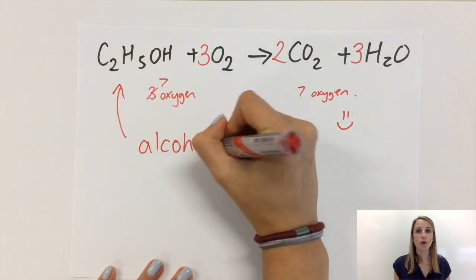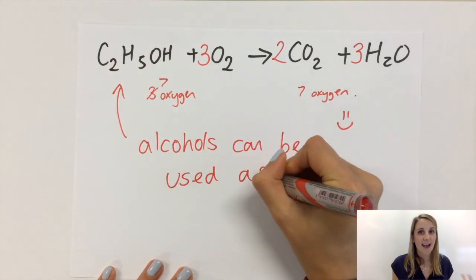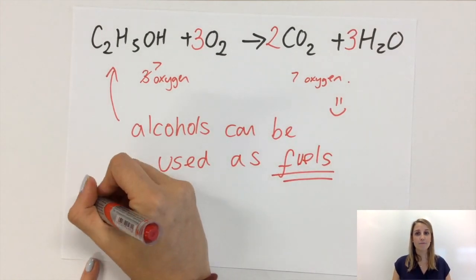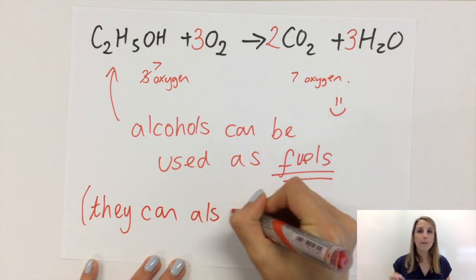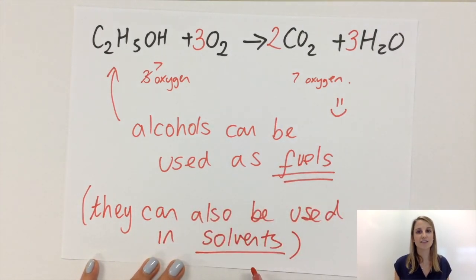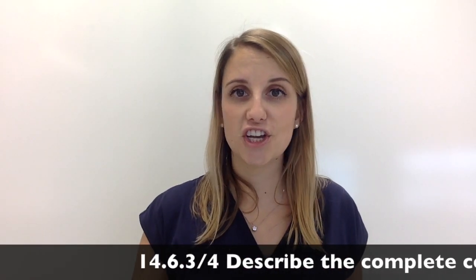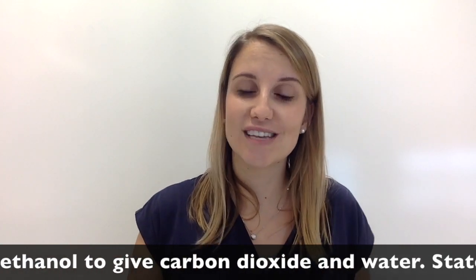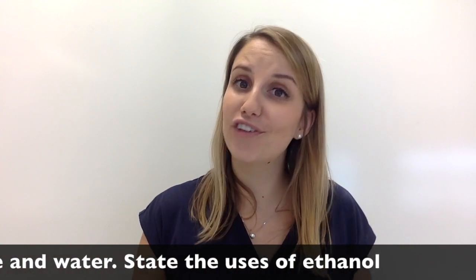So this equation is all about burning alcohols and this shows that alcohols are really good to be used as fuels. The other main use for alcohols is as solvents, so that means to dissolve other stuff. And that is all, the complete combustion of ethanol as well as the two main uses for alcohols which is as fuels and as solvents.